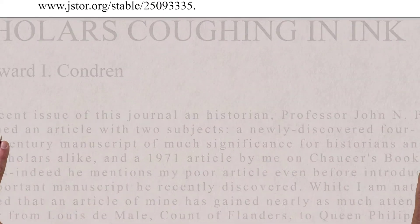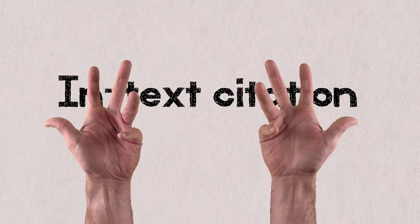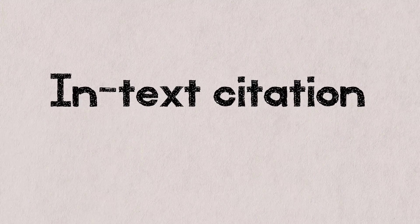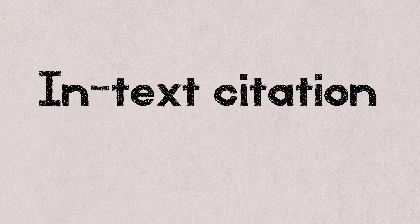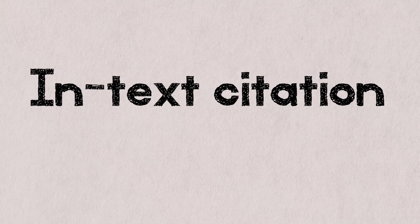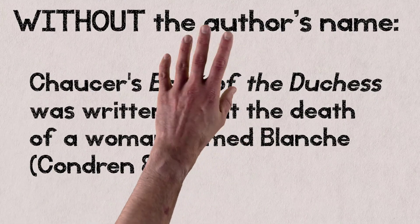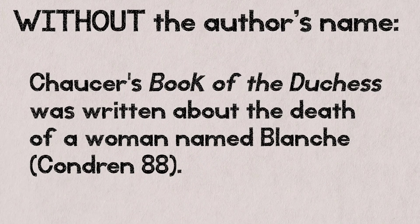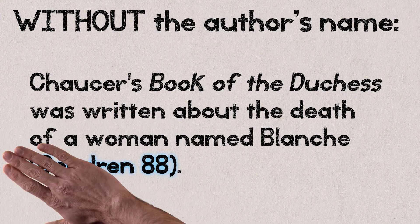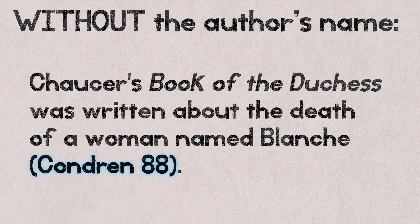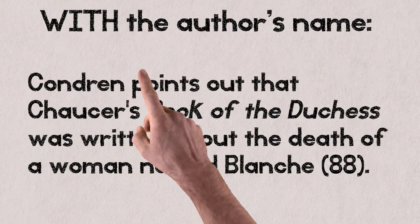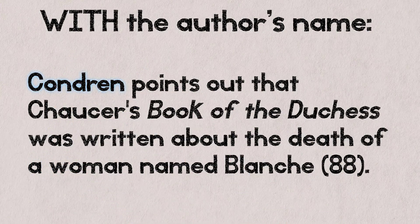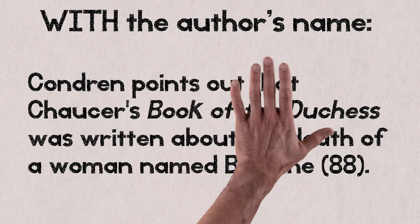That's the Works Cited entry. But what about in-text citation? Thankfully, that's not so bad, although there are a few ways to go about it, depending on whether or not you mention the author's name in the sentence. If you refer to the article without using the author's name, we give credit by putting his last name in parentheses at the end of the sentence, followed by the page number where the information comes from. Now, if you do mention the author's name in the sentence, we only need to share the page number in parentheses.